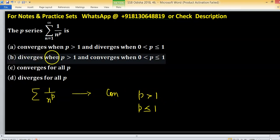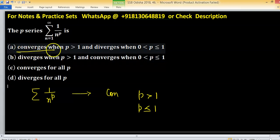According to this, option A will be correct: converges when p is greater than 1 and diverges when p lies between 0 and 1.